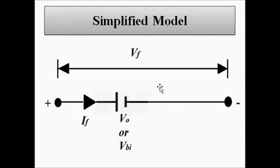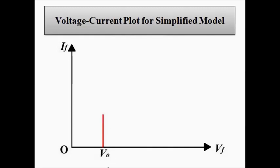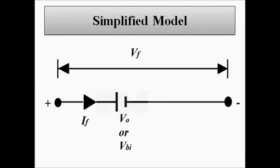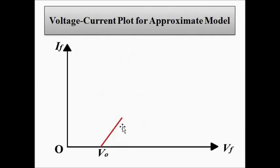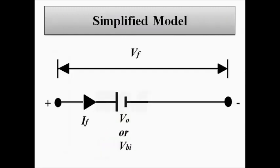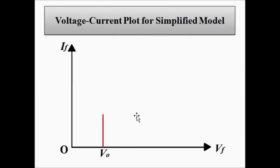In the V-I plot for the simplified model, there is no ohmic behavior and no slope. Once the forward voltage reaches the cut-in voltage or built-in potential, the current shoots straight up — because there is no forward resistance, there is no opposition to the flow of forward current. Before the cut-in voltage is reached, there is no current, the same as in the approximate model. But once it reaches the built-in potential, the forward current has a sharp, nearly vertical increase.